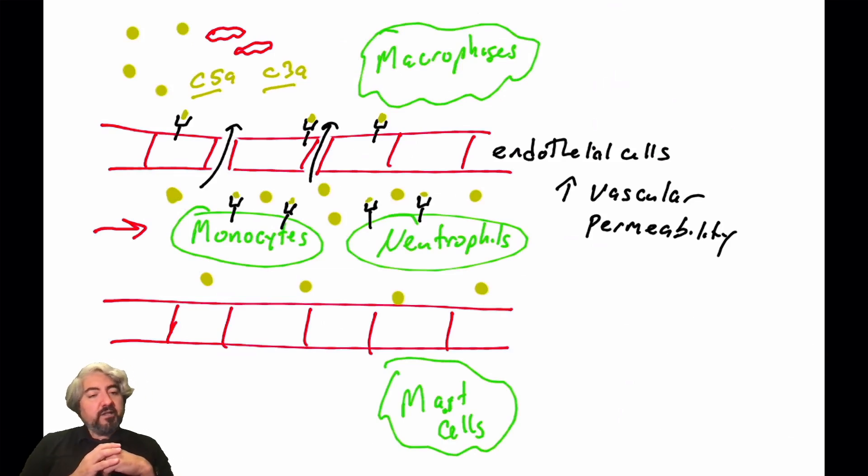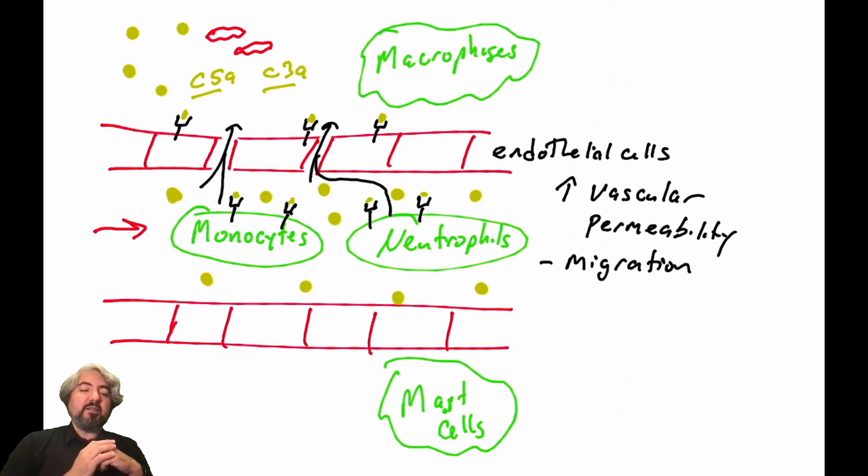Monocytes and neutrophils also have receptors for C5A and C3A. When those anaphylatoxins bind those cells, they help trigger those cells to help migrate them to the infected or inflamed site. They help recruit cells into the inflamed tissue. If we recall, monocytes, when they enter in the tissues, they will also differentiate into either macrophages or dendritic cells, both of those being phagocytes that help destroy or phagocytose the pathogen. So anaphylatoxins can trigger recruitment of immune cells into the inflamed site.